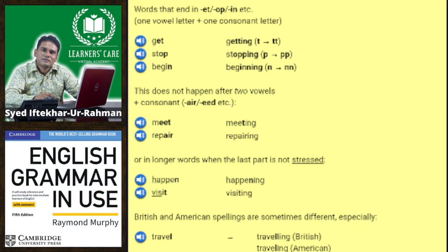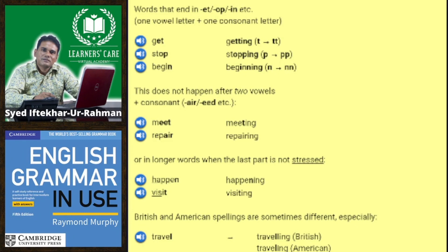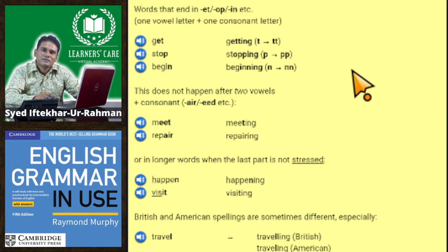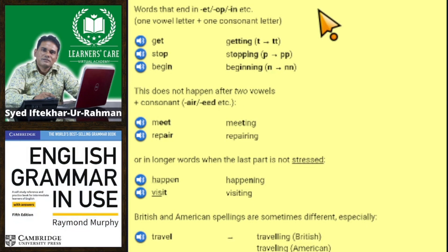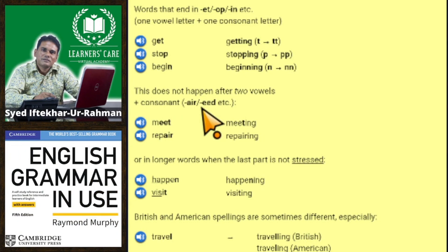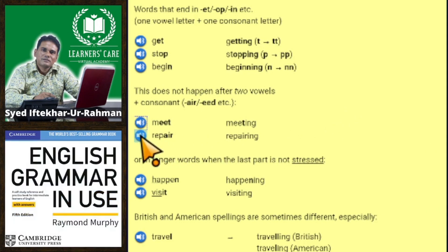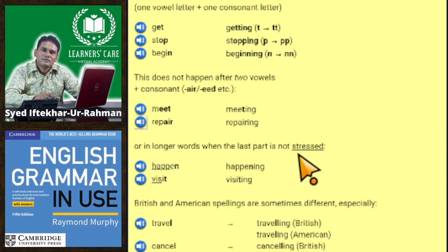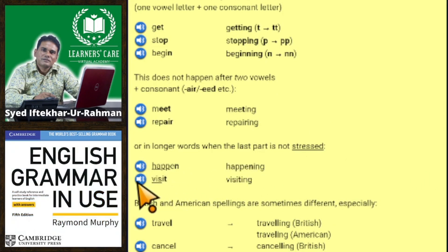Words that end in one vowel letter plus one consonant letter double the consonant: get → getting, stop → stopping, begin → beginning. This does not happen after two vowels: meet → meeting, repair → repairing. Or in longer words when the last part is not stressed: happen → happening, visit → visiting.